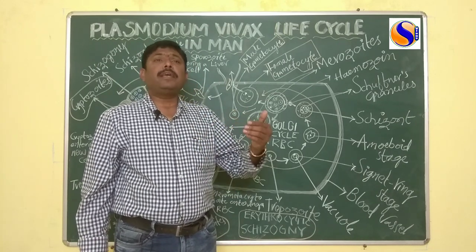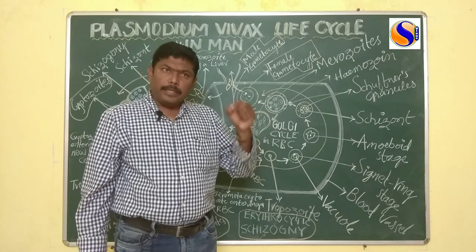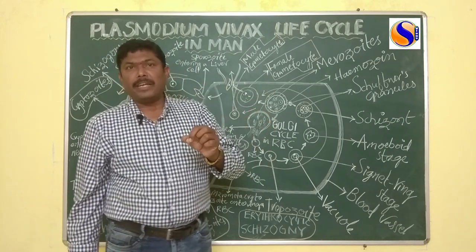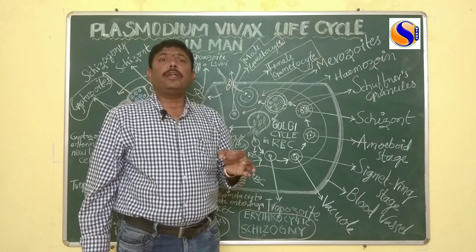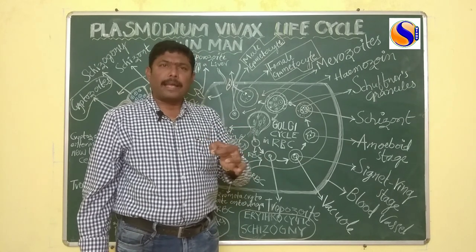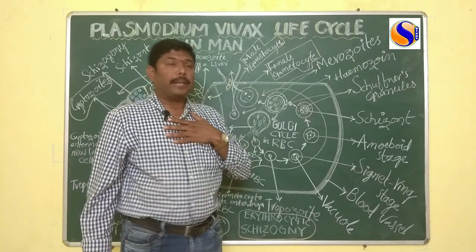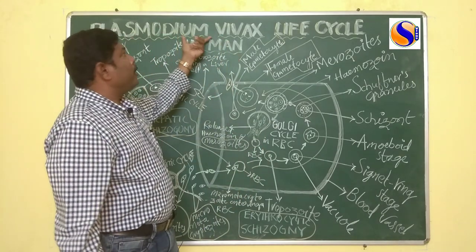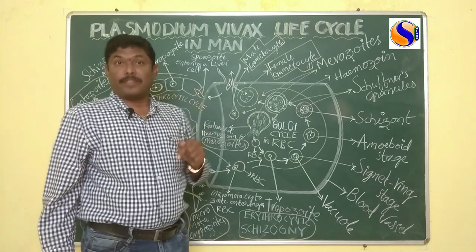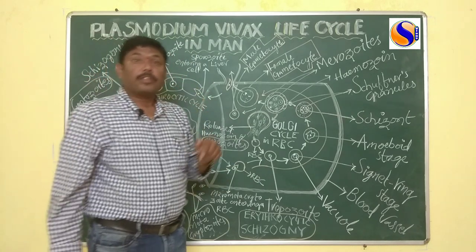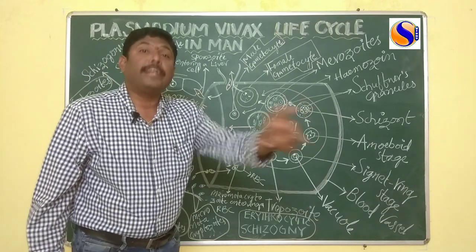In the female Anopheles mosquito, the Plasmodium completes its sexual life cycle — that is why we call it the primary host. And in man, Plasmodium vivax completes an asexual life cycle — that is why we take man as the secondary host.